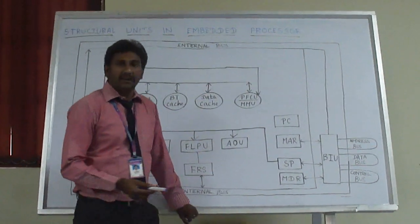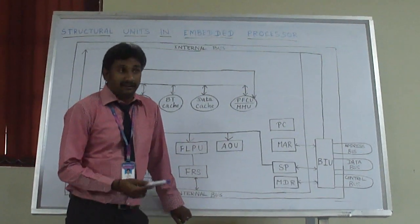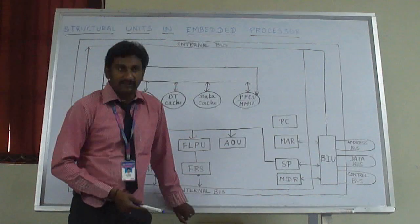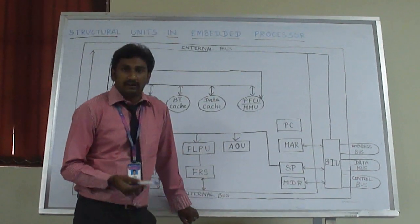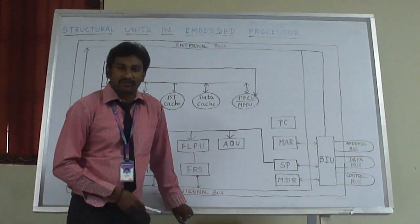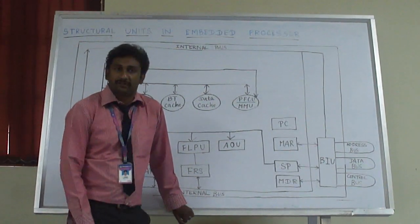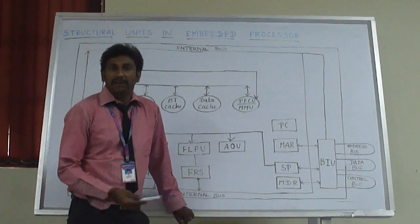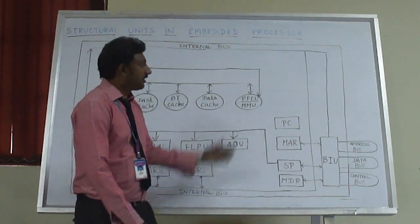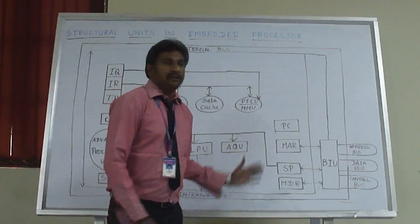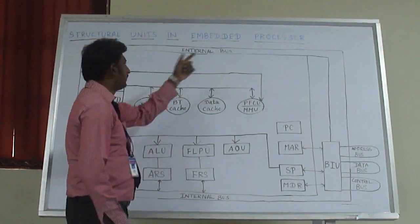There are many examples of embedded processors, such as DSP processor, Davency processor, OMAP processor, and Application Specific Instruction processor. There are many examples of it. This here is the basic structure of an embedded processor.